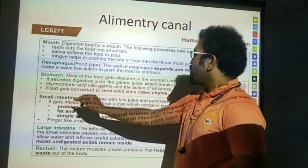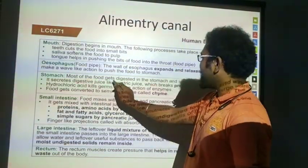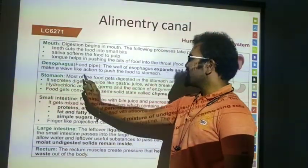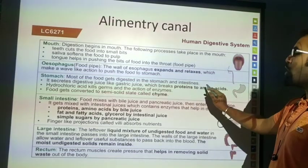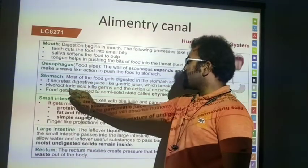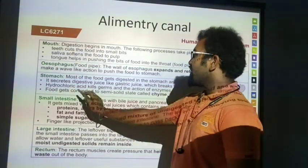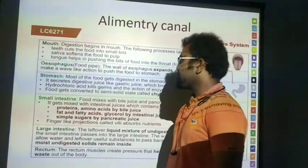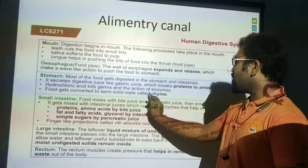Stomach. In the stomach, it contains HCl. Most of the food gets digested in the stomach. It secretes digestive gastric juices, which break down protein into amino acids. Hydrochloric acid kills the germs. The food is also converted to a semi-solid state by the action of enzymes.